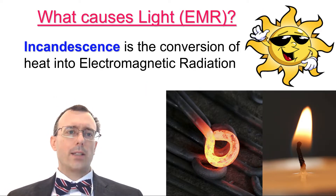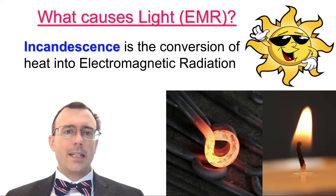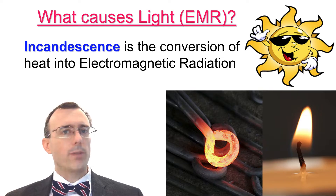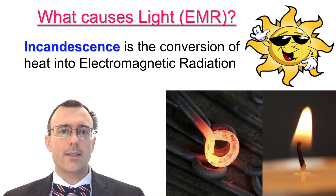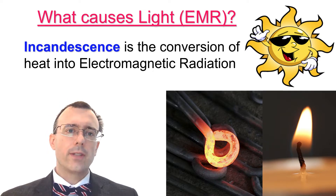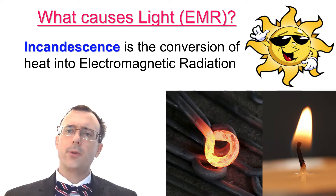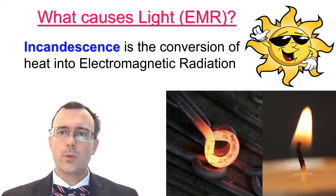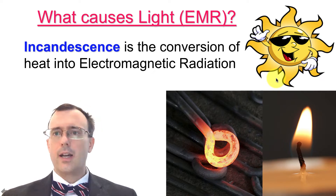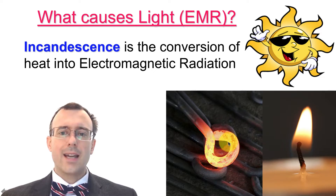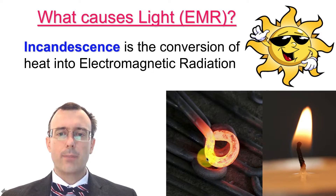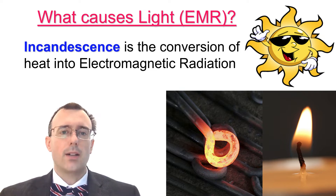The first way that you can make light is known as incandescence — that's where incandescent light bulbs get their name. Incandescence is the conversion of heat into electromagnetic radiation. A few examples would be the sun, which is very hot and creates a lot of light; fire, which creates light through incandescence; and heating up a piece of metal so it glows — that's just a conversion of heat into light.